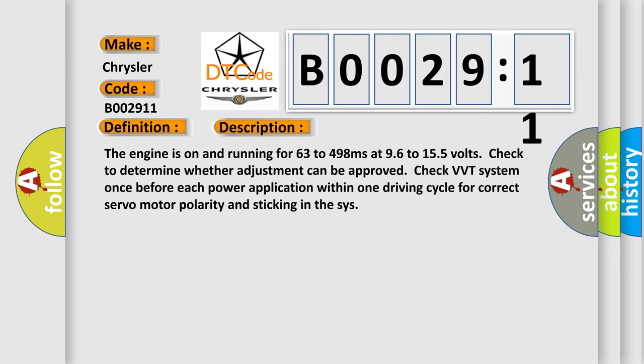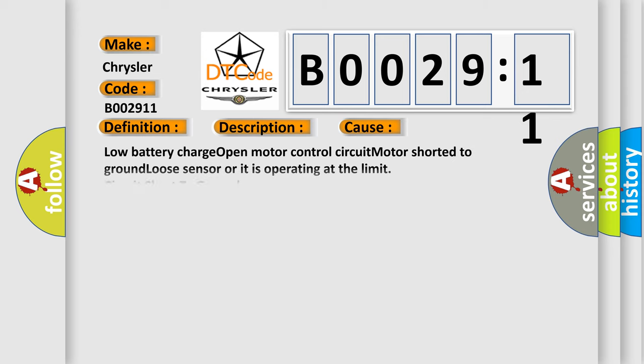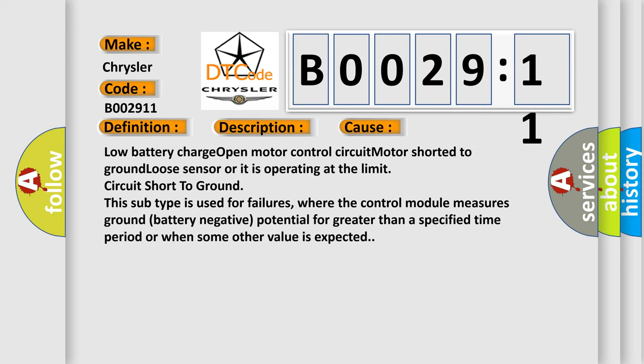This diagnostic error occurs most often in these cases: low battery charge, open motor control circuit, motor shorted to ground, loose sensor or it is operating at the limit, circuit short to ground. This subtype is used for failures where the control module measures ground battery negative potential for greater than a specified time period or when some other value is expected.